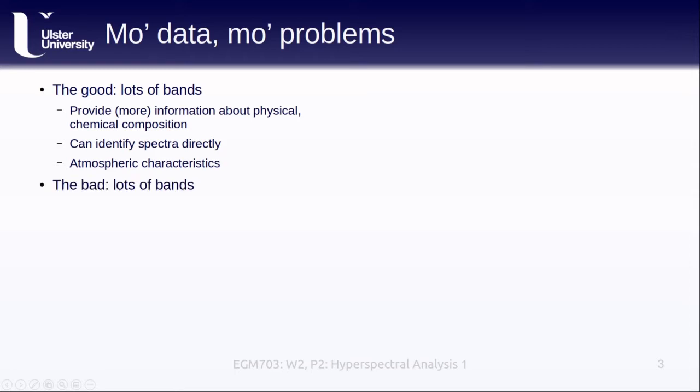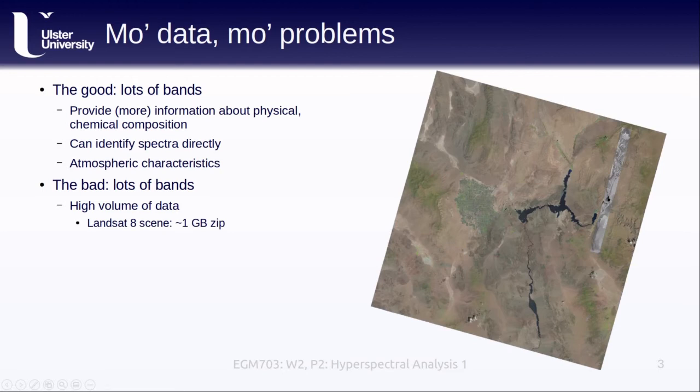On the other hand, the bad thing about hyperspectral images is that they have lots of bands. This means that they have a comparatively high volume of data. As an example, the Landsat image shown here has only 11 bands, with a zip size of about 1 gigabyte. The EO-1 Hyperion scene, shown in black and white and outlined here in blue, has a zip size of about 250 megabytes, despite having the same spatial resolution as most of the Landsat bands. This is because it has about 20 times more bands than the Landsat image.